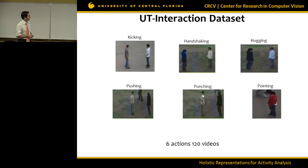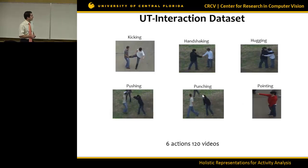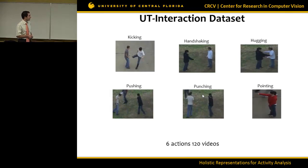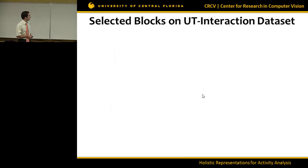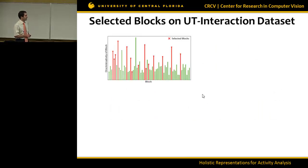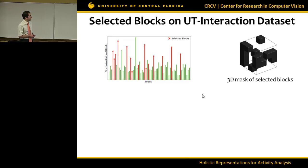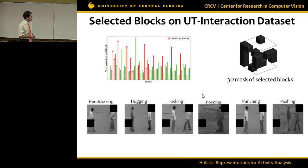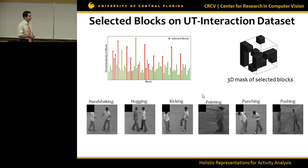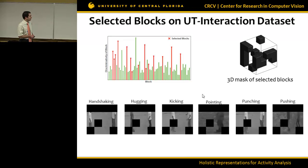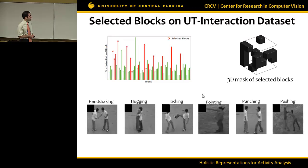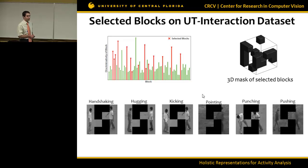On the UT interaction dataset with six action classes — kicking, handshaking, hugging, pushing, punching, and pointing — with 20 videos per class (120 total), we select only the discriminative blocks (shown in red) and remove the confusing ones (shown in green). This corresponds to a 3D mask for the dataset, where unimportant regions of the video are removed while regions where the actions occur or people are present are retained for descriptor computation.